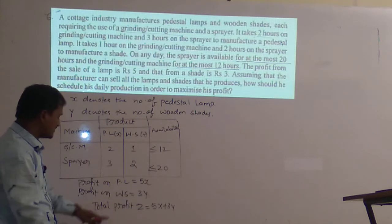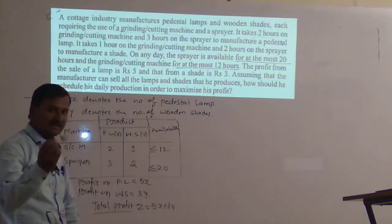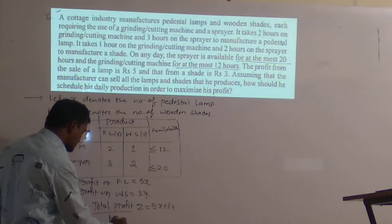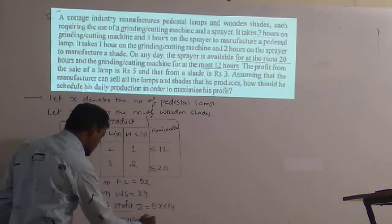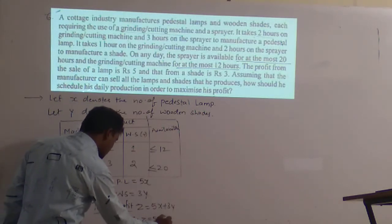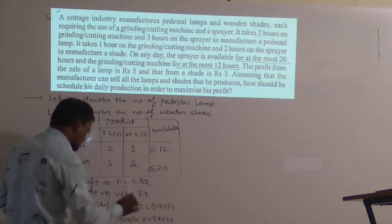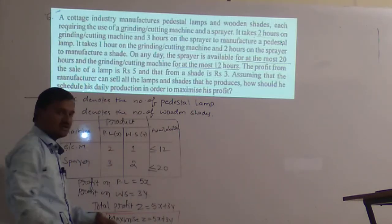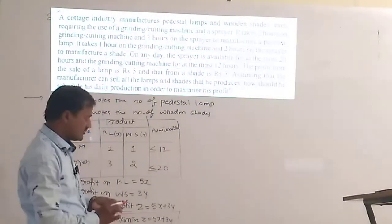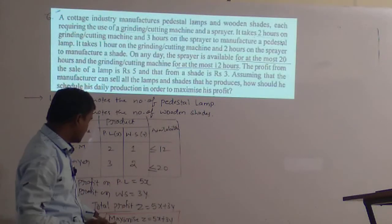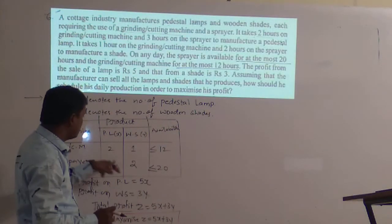The total profit becomes Z = 5x + 3y. Since this is profit, we will maximize it. So the objective function is: Maximize Z = 5x + 3y. This gives the objective function of the LPP.